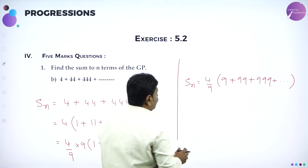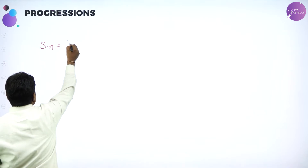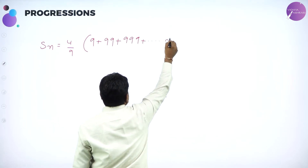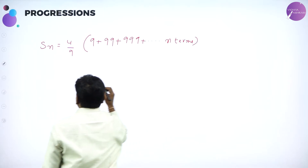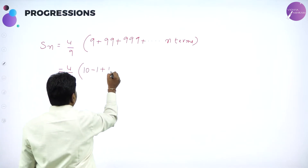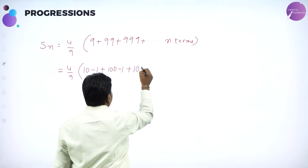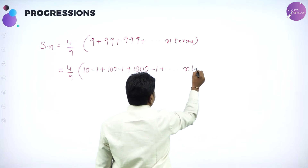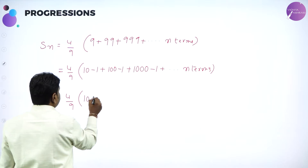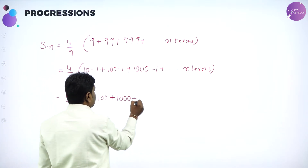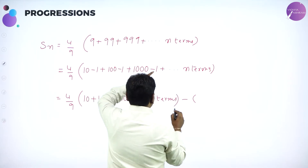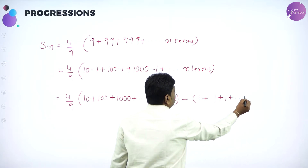Now we will simplify. We have Sn = 4/9 × (9 + 99 + 999 + ...) till n terms. Write it as 4/9: 9 as 10 minus 1, 99 as 100 minus 1, 999 as 1000 minus 1, till n terms. Now group: 10 + 100 + 1000 + ... till n terms is one group. And minus 1 minus 1 minus 1 — take minus common — gives 1 plus 1 plus 1 till n terms.